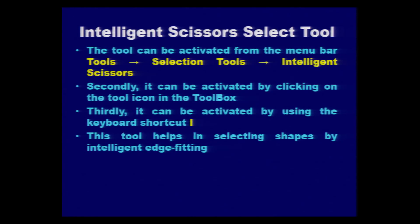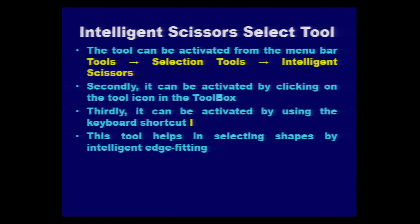The third tool in this category is the Intelligent Scissor Select tool. This tool can be activated from the menu bar by going to Tools, then Selection Tools, then Intelligent Scissors. It can also be activated by clicking directly on the tool icon in the GIMP toolbox, or by pressing the keyboard shortcut I.